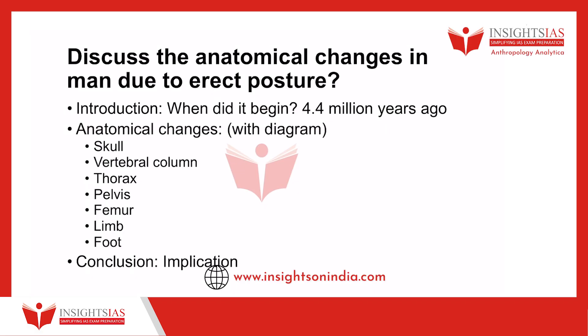In this video, we shall discuss this particular question: discuss the anatomical changes that have happened in man due to erect posture. This is a very important question that is asked almost every alternative year. There are two types of questions — one is the comparison between man and ape, and the other is anatomical changes that occurred in man due to erect posture. Almost every year they ask one of these two questions.